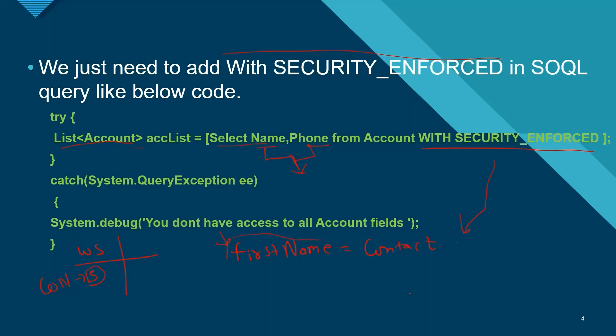That's all regarding WITH SECURITY_ENFORCED. The difference between WITH SECURITY_ENFORCED and WITH SHARING or WITHOUT SHARING is: WITH SHARING and WITHOUT SHARING are only for record access — whether a particular user has access to records or not. WITH SECURITY_ENFORCED is used in SOQL to check whether the fields being queried are accessible to the user or not — that is, whether a particular field is accessible to the user.